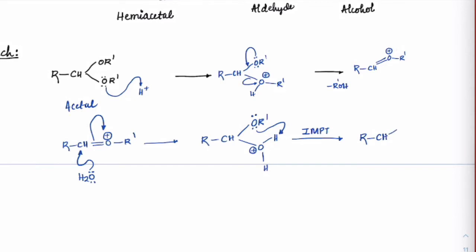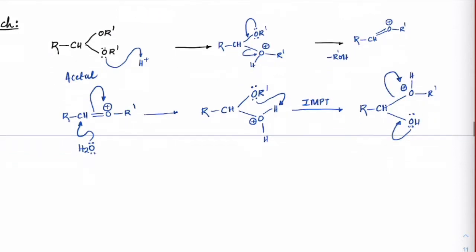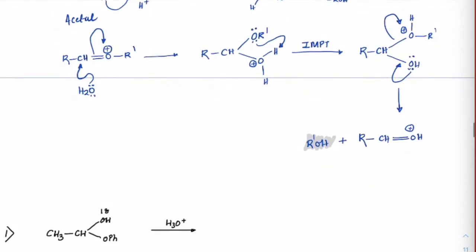We get RCH(OH)(R') and OH, which becomes a good leaving group. The lone pair supports bond breaking, so this group leaves. We now have RCH double bond OH⁺ plus R'OH — so one more R'OH has come out. Both moles of R'OH have now come out, and this group gives away H⁺ because it is in acidic solution, and we end up with an aldehyde.